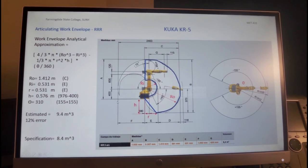So you see that here. And then H is given to us as 976 minus 400, so it's 576. And then theta is 310 degrees.